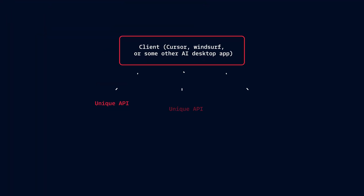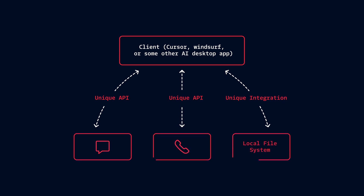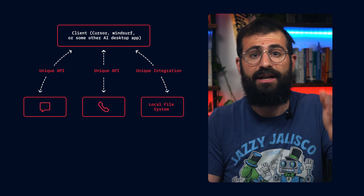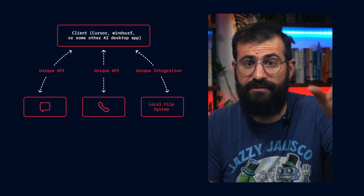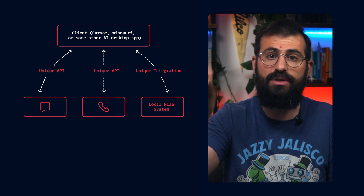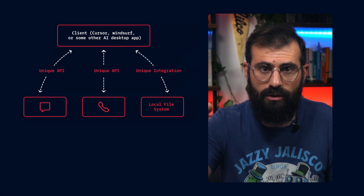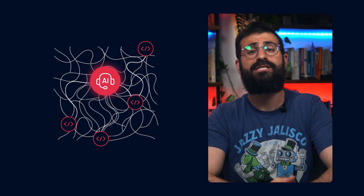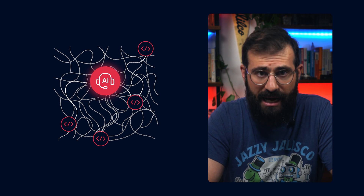Before MCP, integrating an AI agent with APIs like Twilio's meant manually building custom integrations — not just for each individual endpoint, but for each unique agent too. Essentially building roads by hand every time you needed to go somewhere new. At scale, this quickly became a big, hot mess. MCP changes everything.